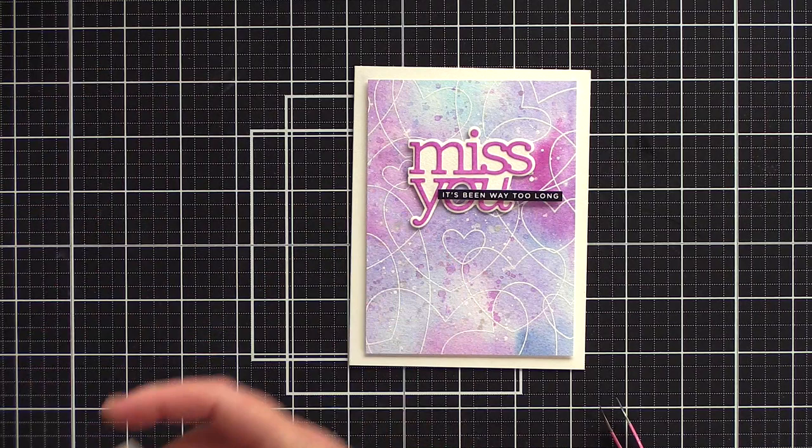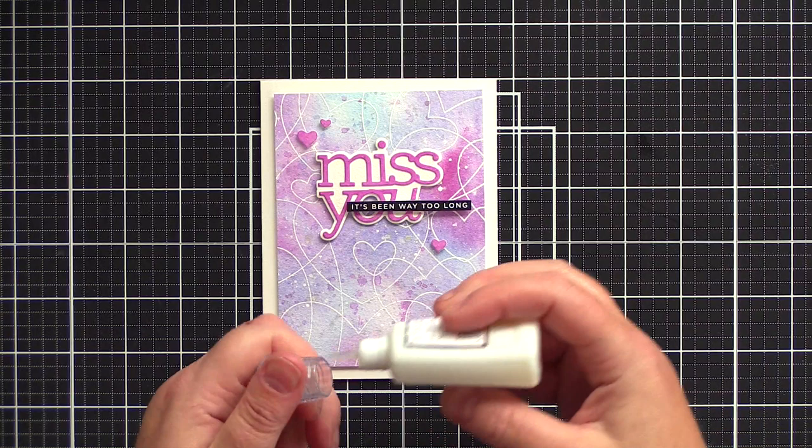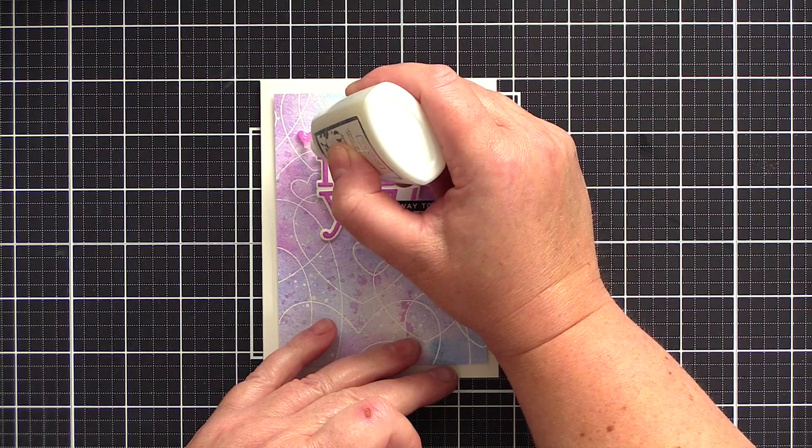I die cut a few hearts from the leftover watercolored card using the holiday shapes dies from Simon Says Stamp and adhered these with foam adhesive before taking them up a notch with a coating of Nouveau crystal glaze to give them a lovely shine.